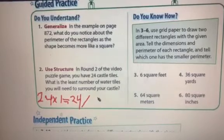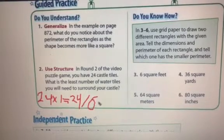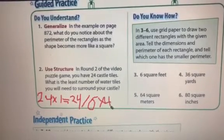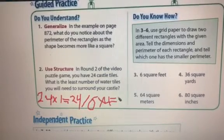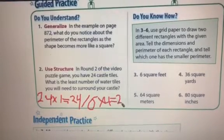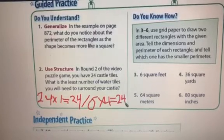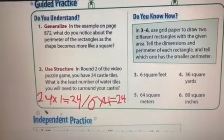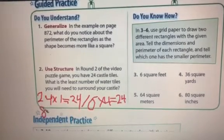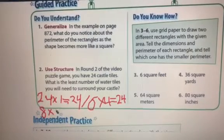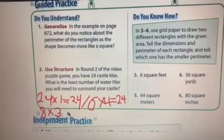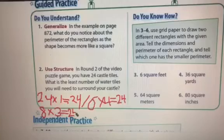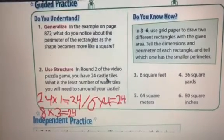Or 6 multiply 4 equals 24. There's another number: 8 multiply 3 also equals 24. Now we will choose one from these three that has the least number of water tiles, meaning the least perimeter.